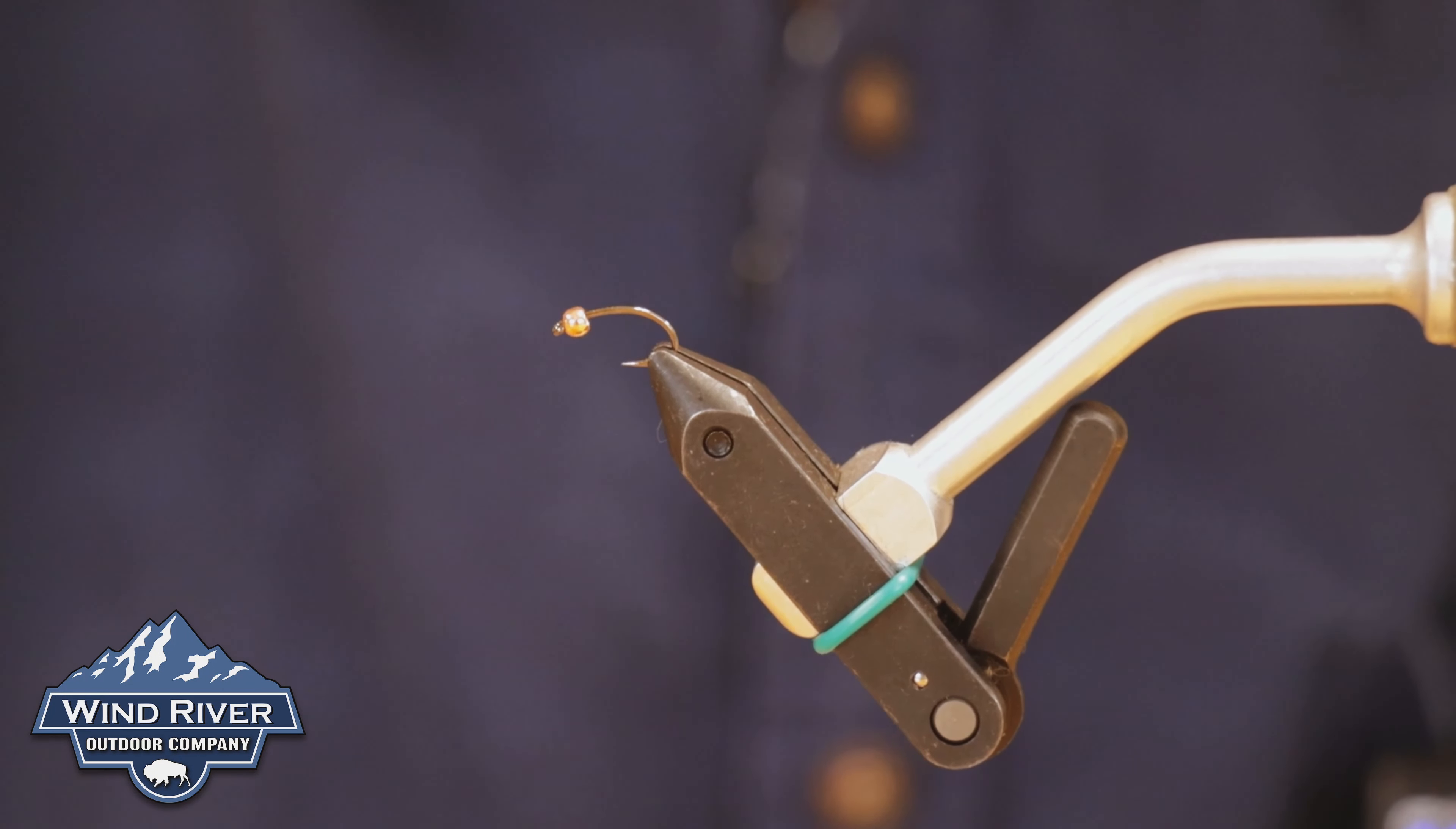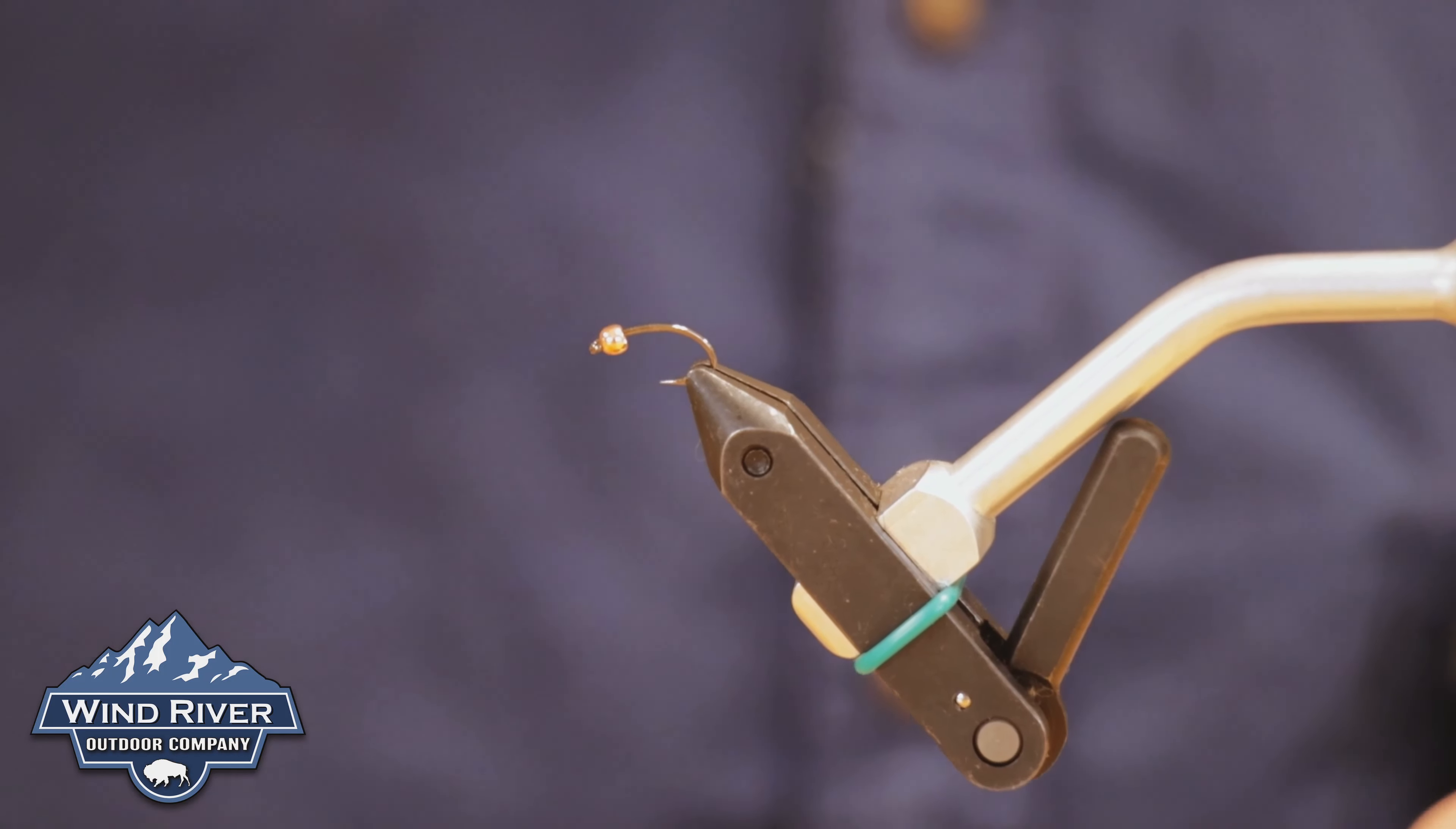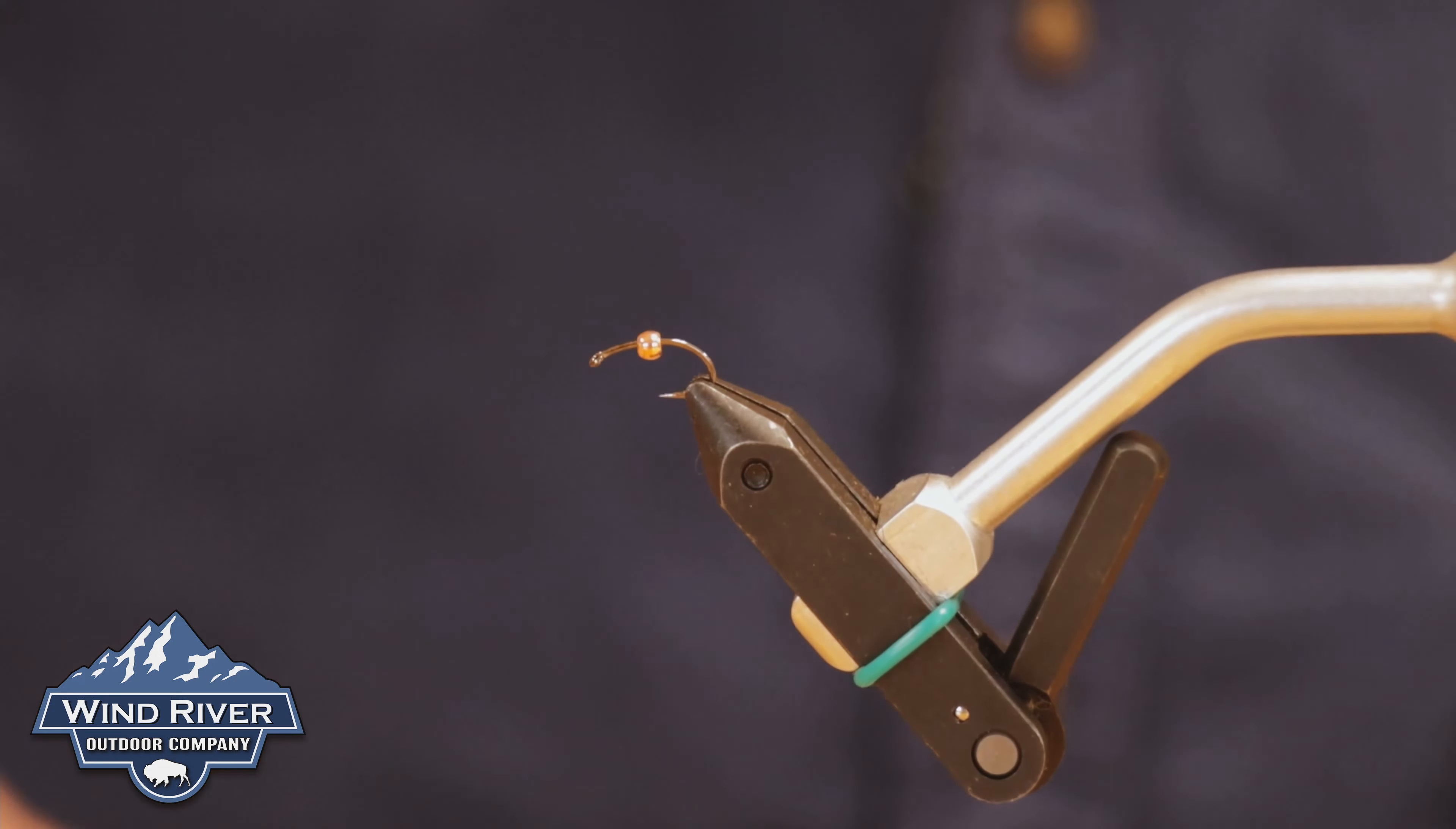Tie it a little different, tie it with a chartreuse rib, which seems to help it indicate a variety of things, not just midge, but maybe some caddis as well. I like to tie it with a copper bead.